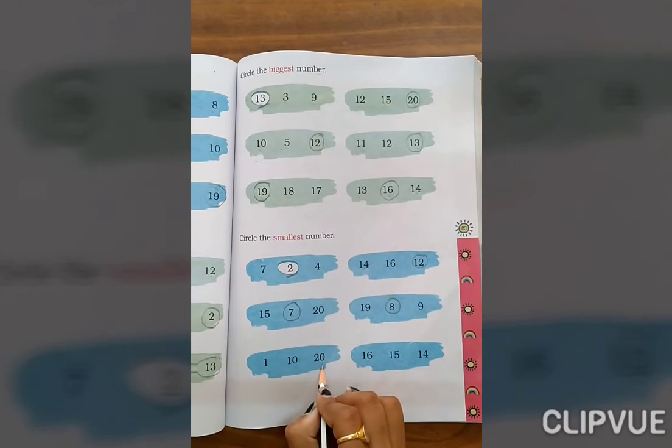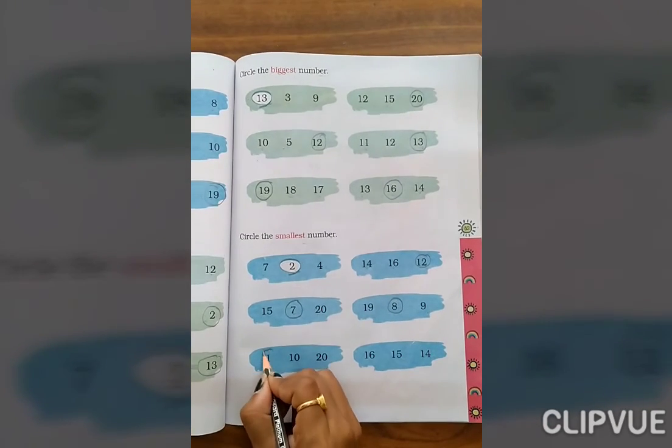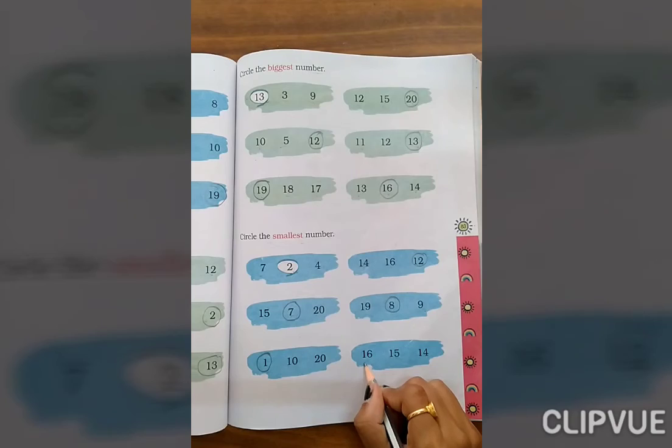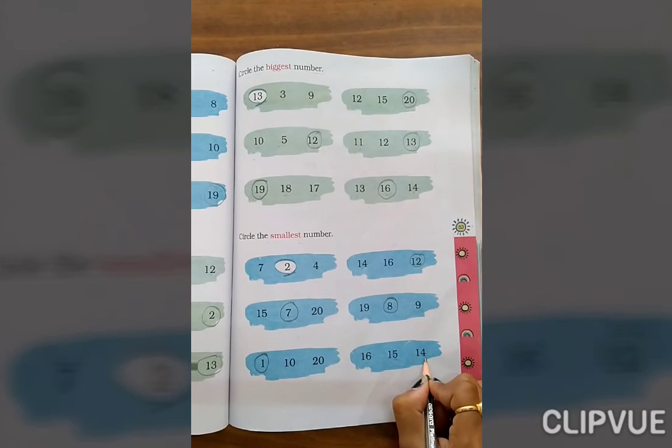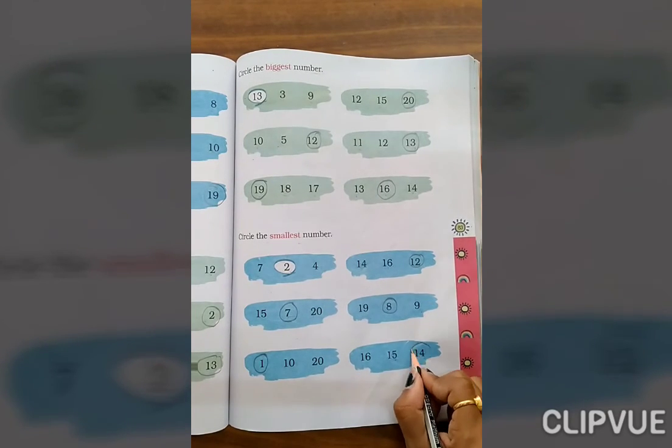1, 10, 20. Which one is smallest number? 1. 16, 15, 14. Which one is smallest? 14.